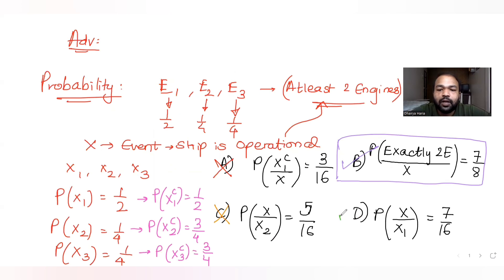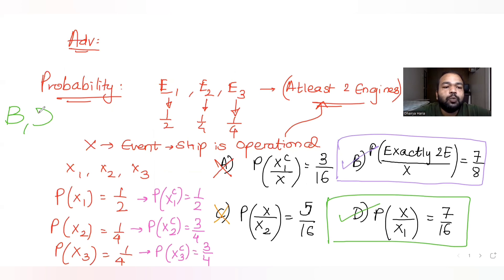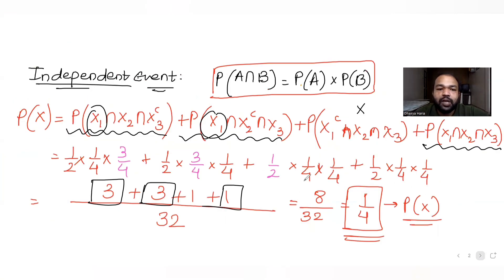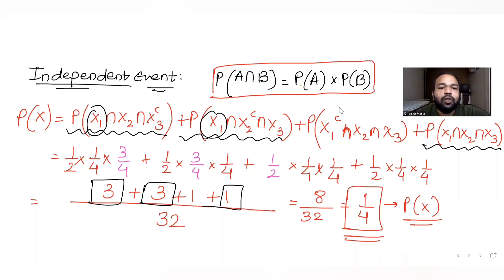From this question we get two correct answers: options B and D. I hope you have understood how to solve this type of question involving independent events with conditional probabilities. We solved the entire question based on these four case ideas — once you understand them, you can easily solve such questions.